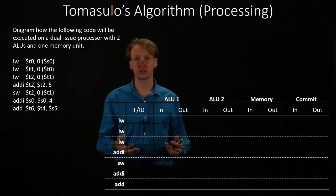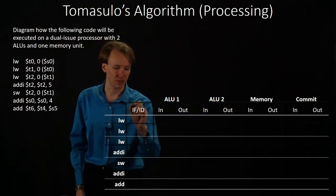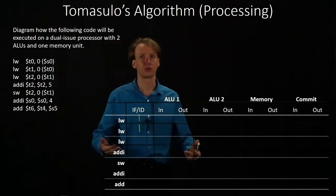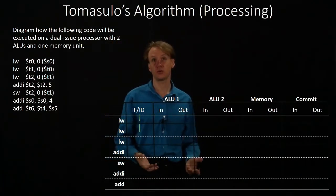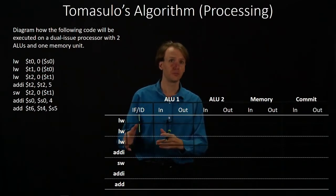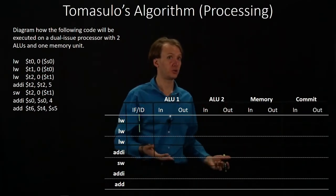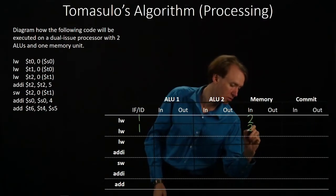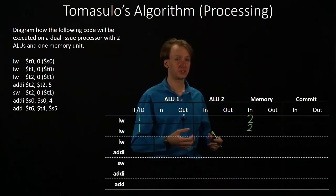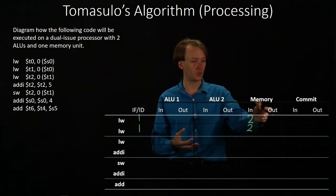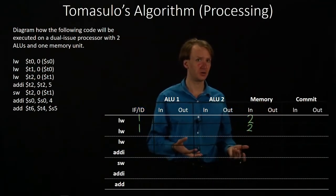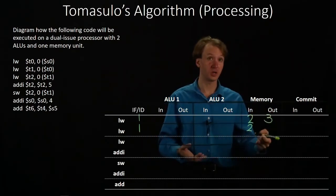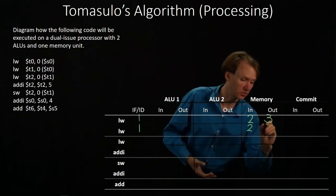In our first cycle, both of our load words come in — we get both of those in cycle one. In cycle two, both of those are going to go off to the memory unit. But since a functional unit can only process one of these two instructions every cycle, it's just going to process one of them in cycle three. Then it will be free in cycle four, and it can process the other one.